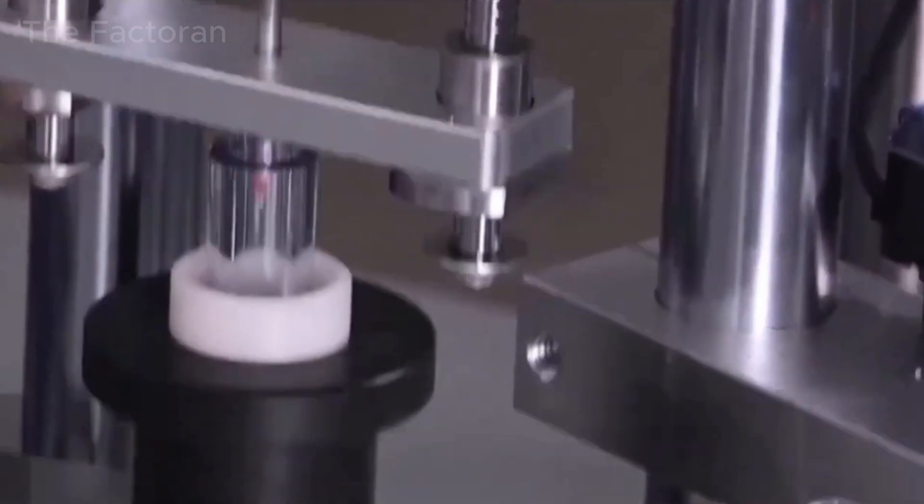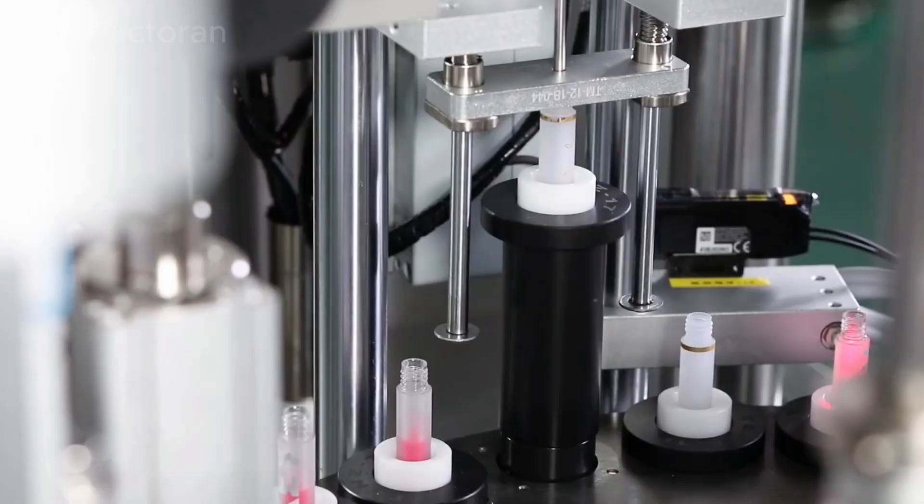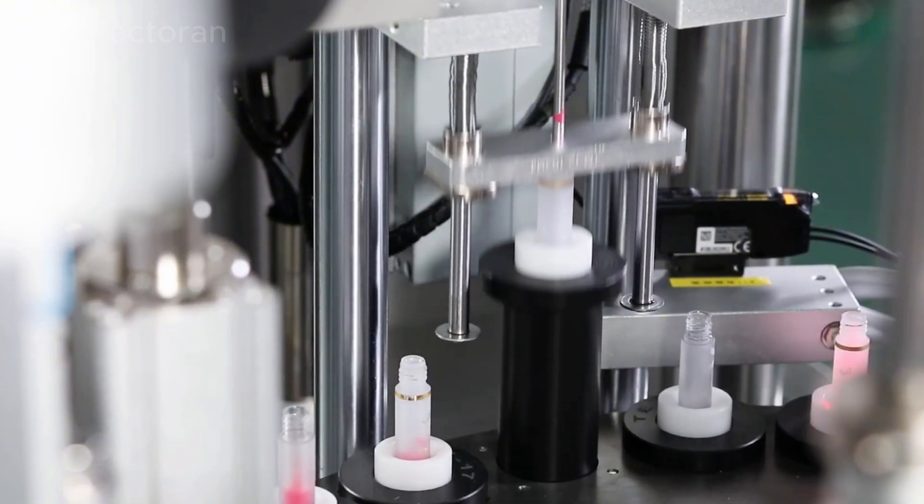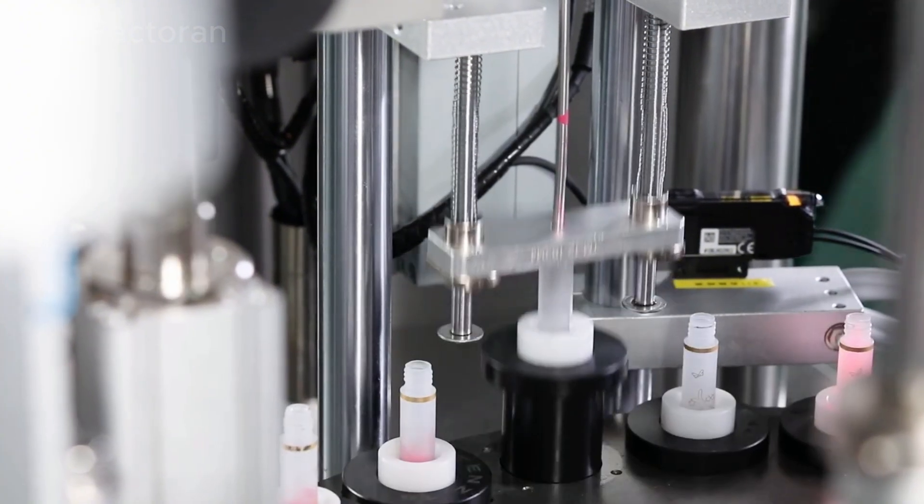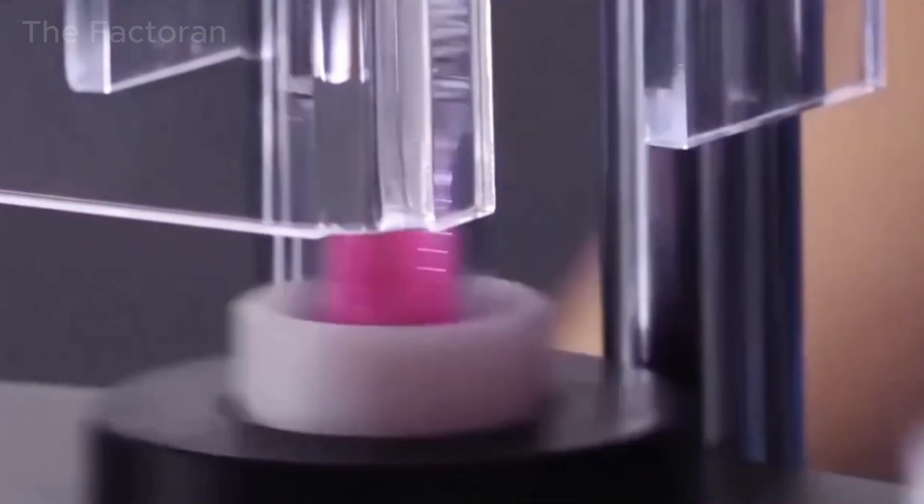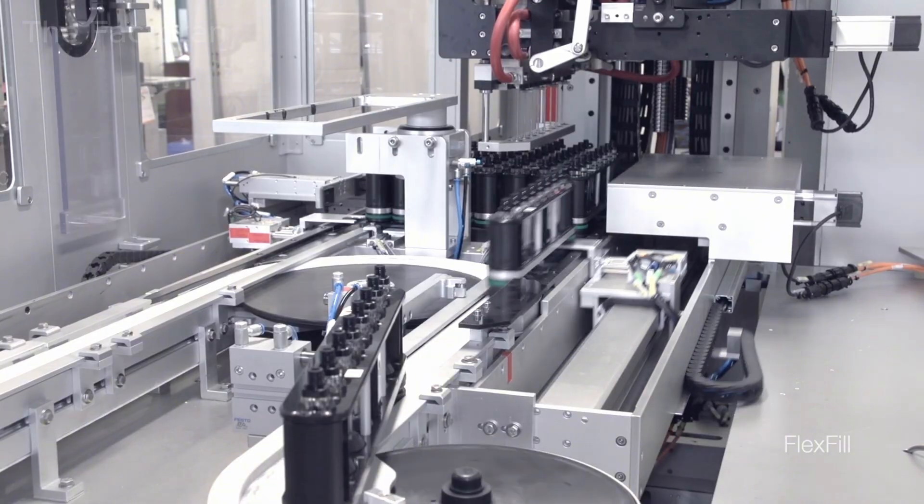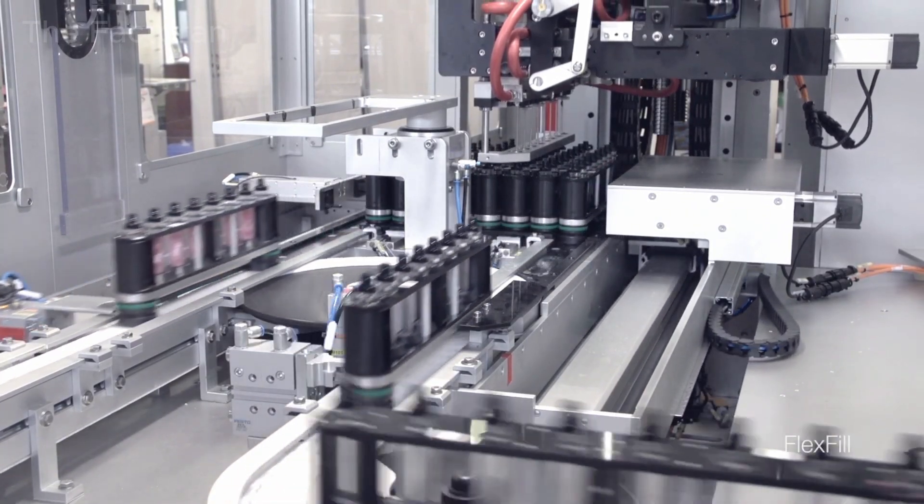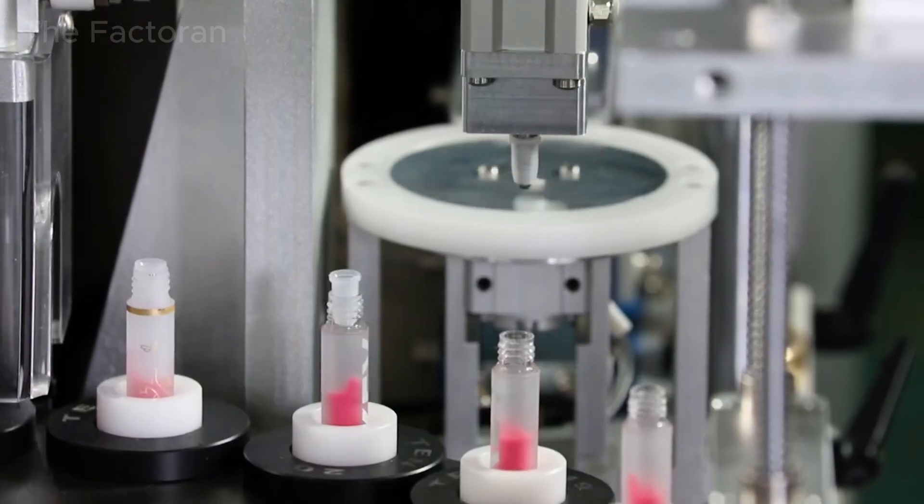At the filling station, a servo-driven metering pump dispenses the liquid lipstick into each container with precisely controlled volume, ensuring uniform fill levels and preventing air bubbles. Filling speed and pump pressure are continuously adjusted to match the viscosity of each specific formulation.